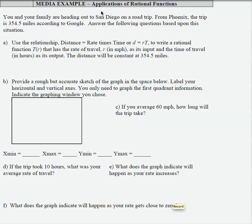Here we have an application of rational functions where you and your family are heading out to San Diego from Phoenix, a trip that is 354.5 miles.